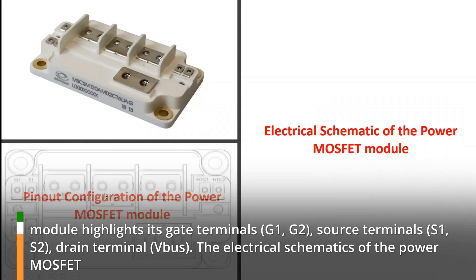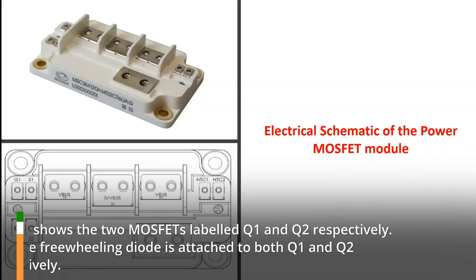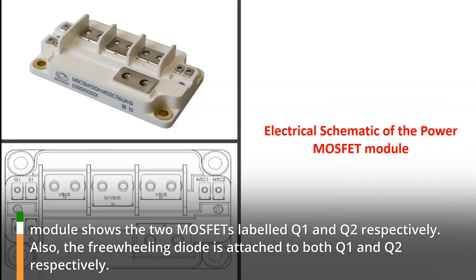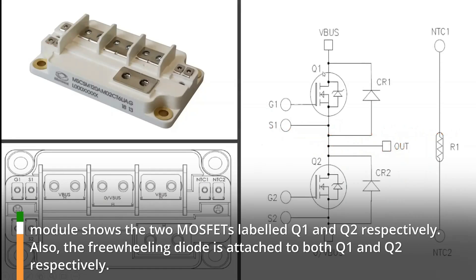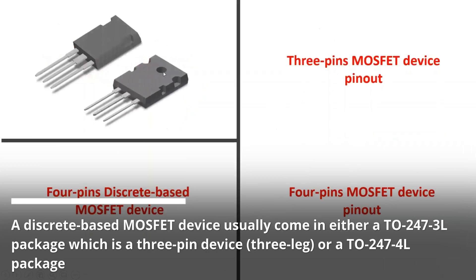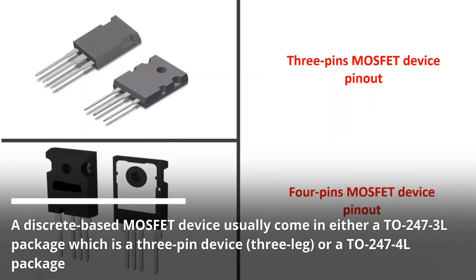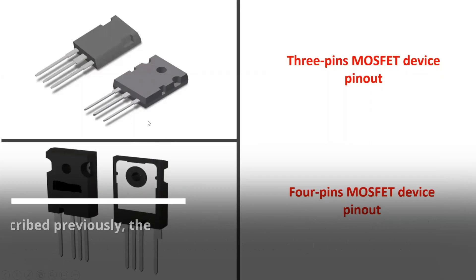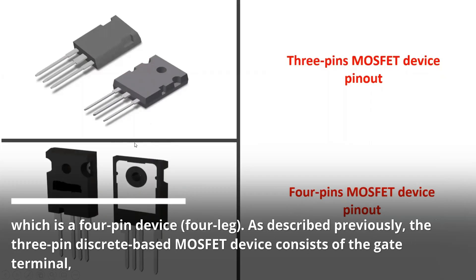The electrical schematics of the power MOSFET module show the two MOSFETs labeled Q1 and Q2 respectively. Also, the freewheeling diode is attached to both Q1 and Q2 respectively. A discrete-based MOSFET device usually comes in either a 2247-3L package, which is a three-pin device, or a 2247-4L package, which is a four-pin device.